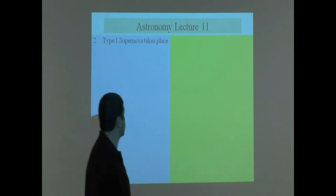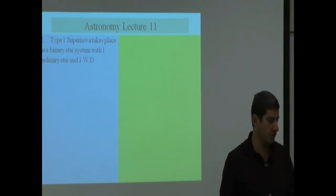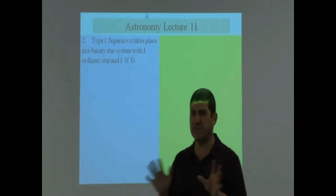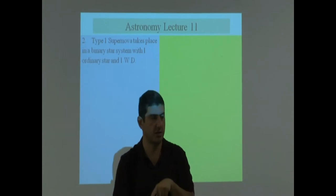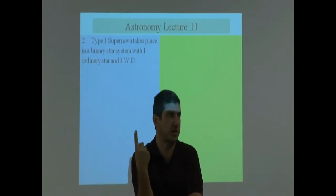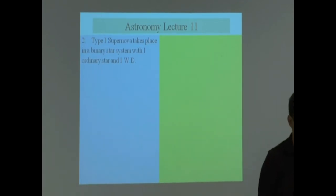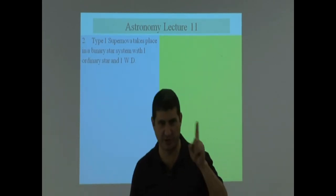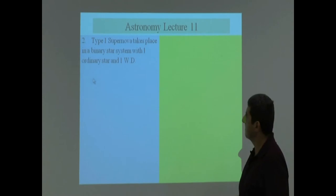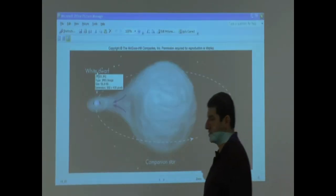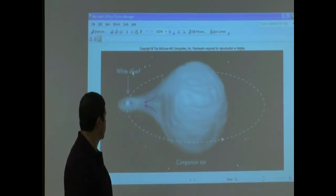Type 1 supernova takes place in a binary star system with one white dwarf and one ordinary star. This is why I said earlier that the way they named it is kind of weird. In order to have a Type 1 supernova, you need two stars in order for that to take place. In order to have a Type 2 supernova, you only need one star. One star dying is a Type 2 supernova. They should have named the first one Type 1, they should have named this Type 2. But they did that so that you guys can get confused on the tests. They want to confuse you as much as possible. So remember it switched the naming.